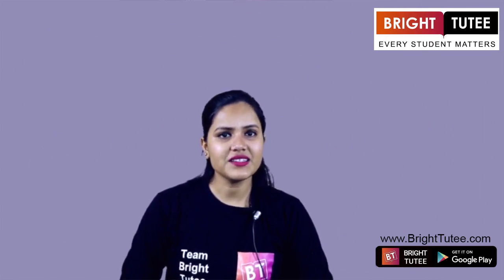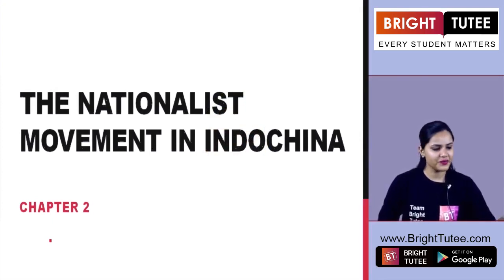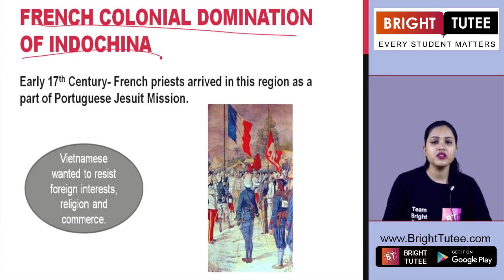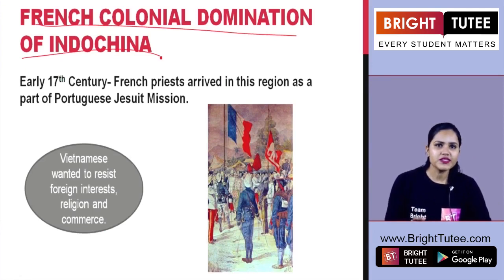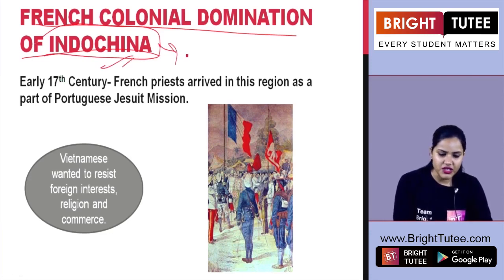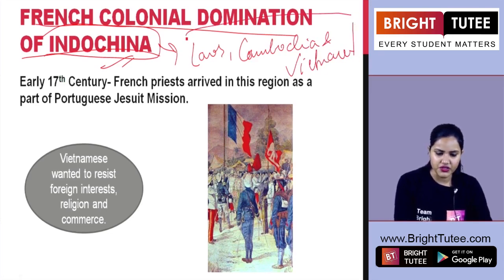Hello everyone. Let's start our second topic of chapter 2, that is the Nationalist Movement in Indochina. The topic's name is French Colonial Domination of Indochina. Before this we had a pre-introduction of Indochina. We saw that it comprises of the regions like Laos, Cambodia, and Vietnam, the modern day regions.